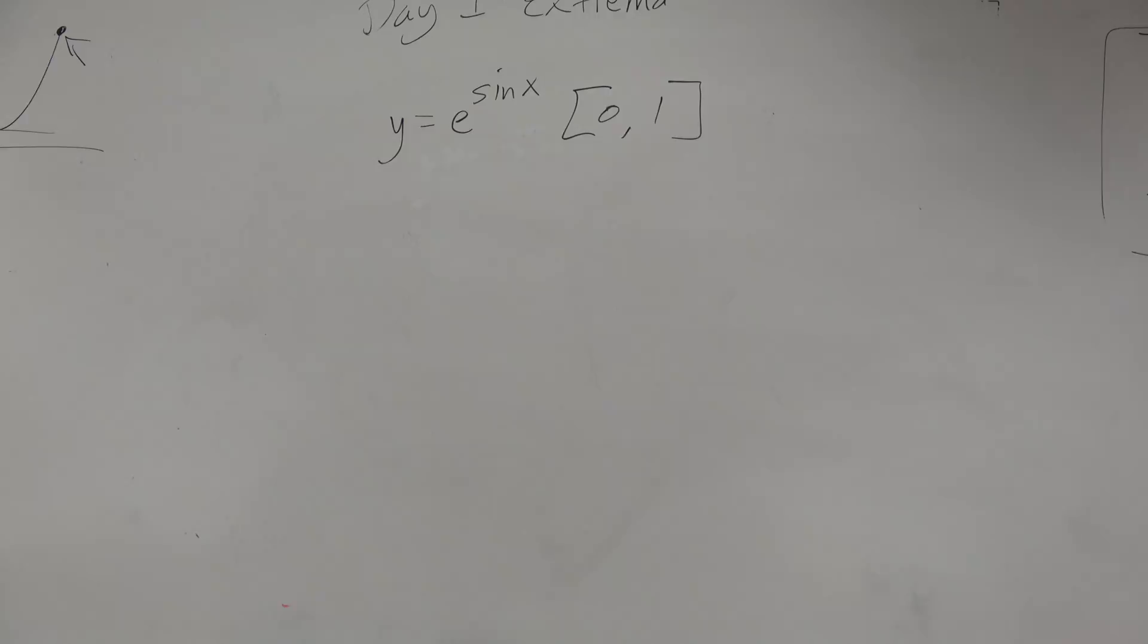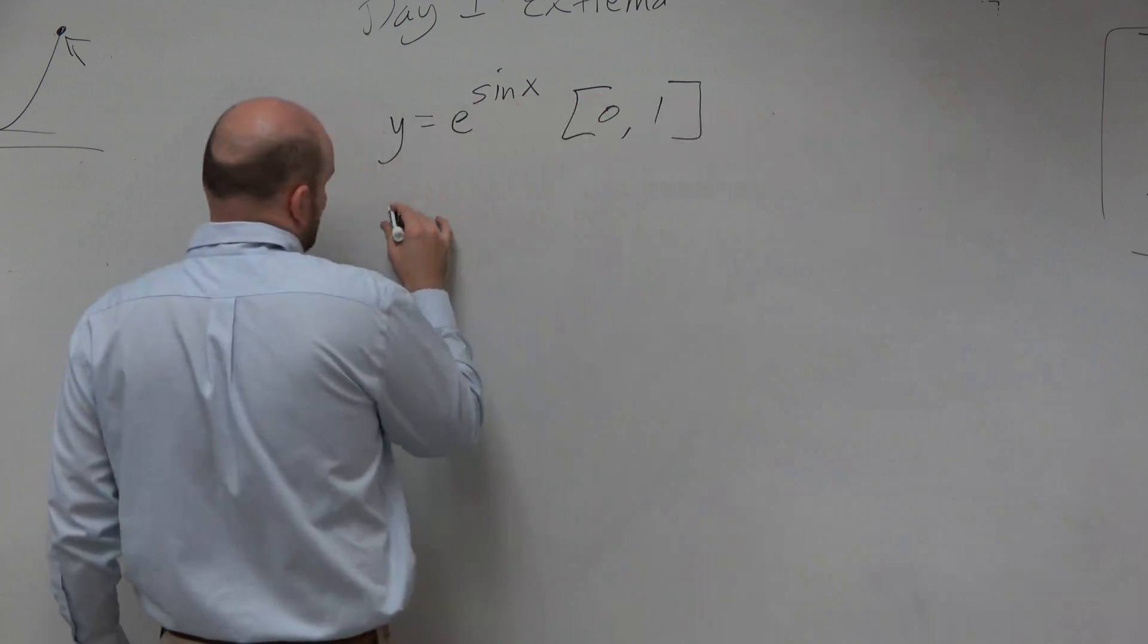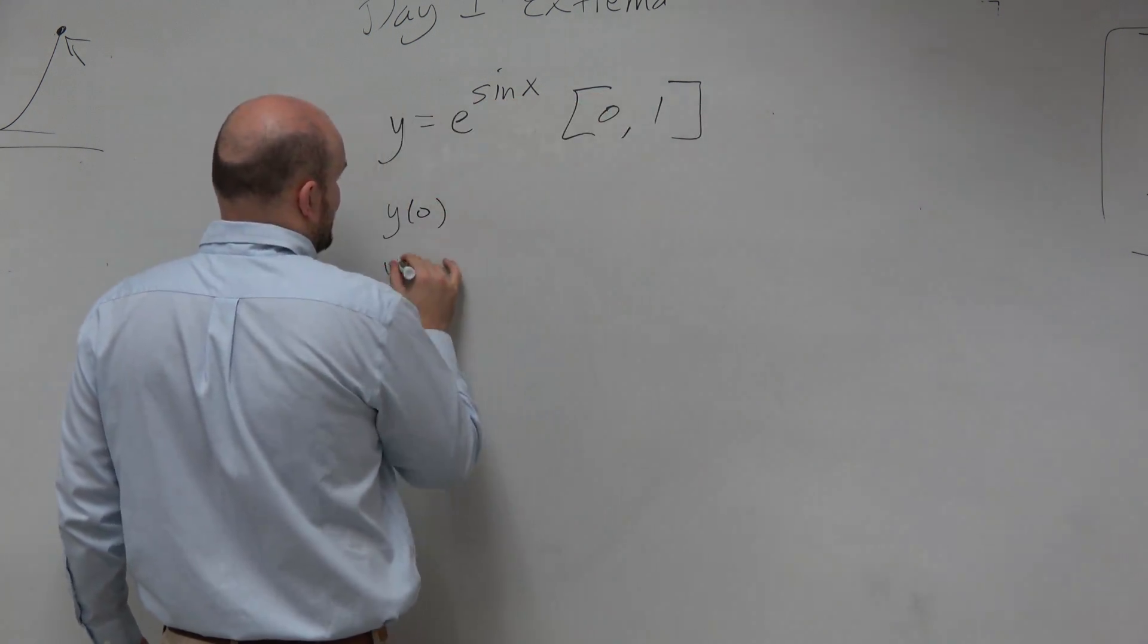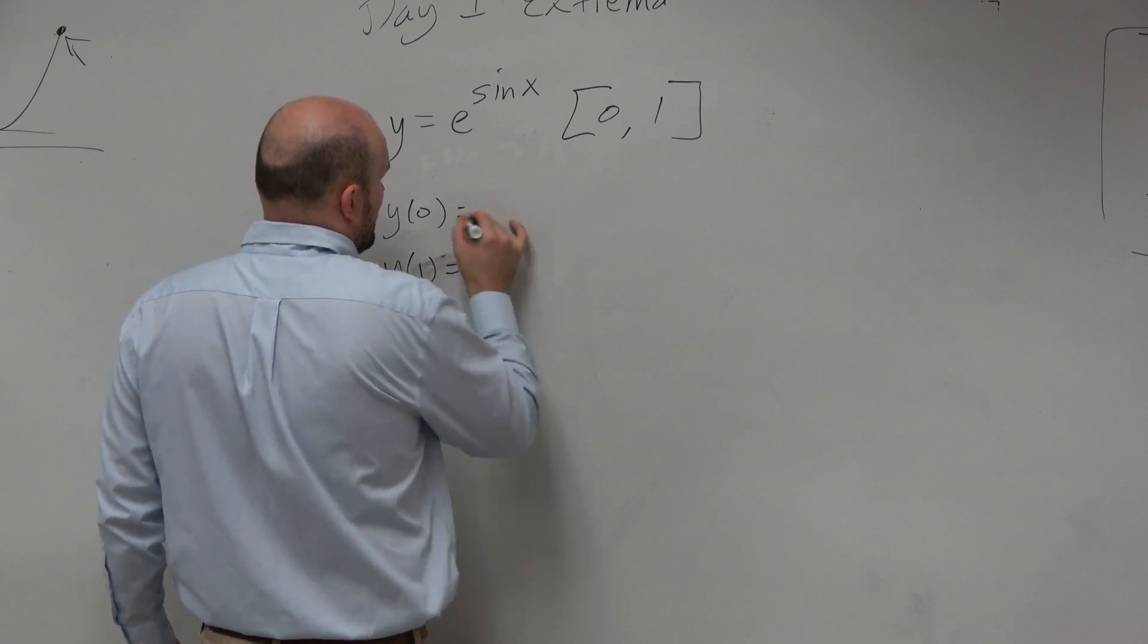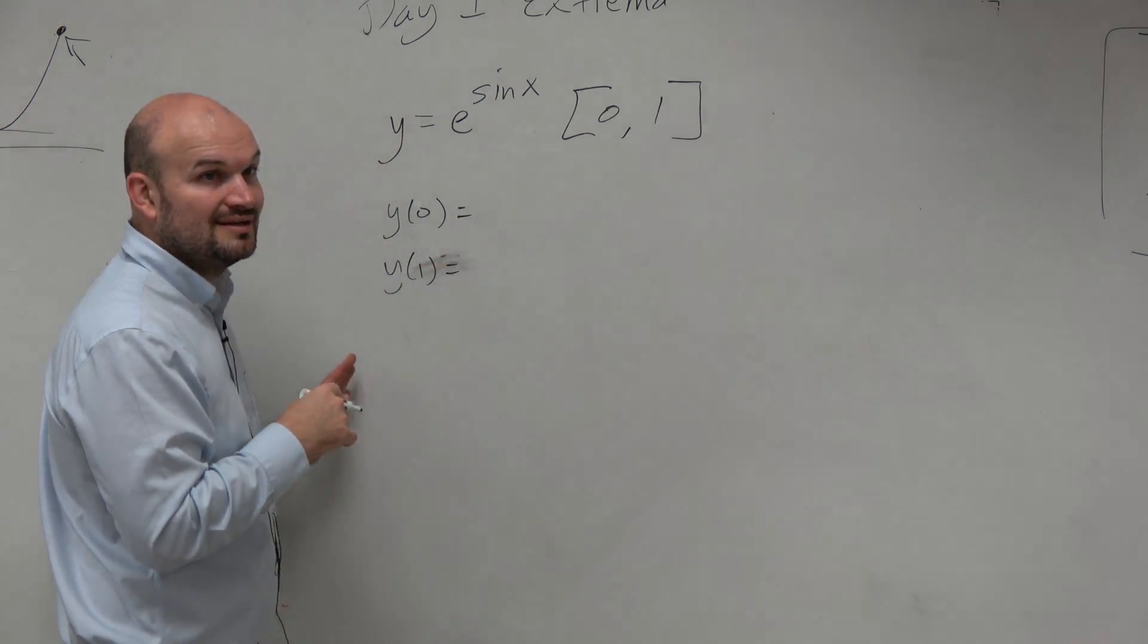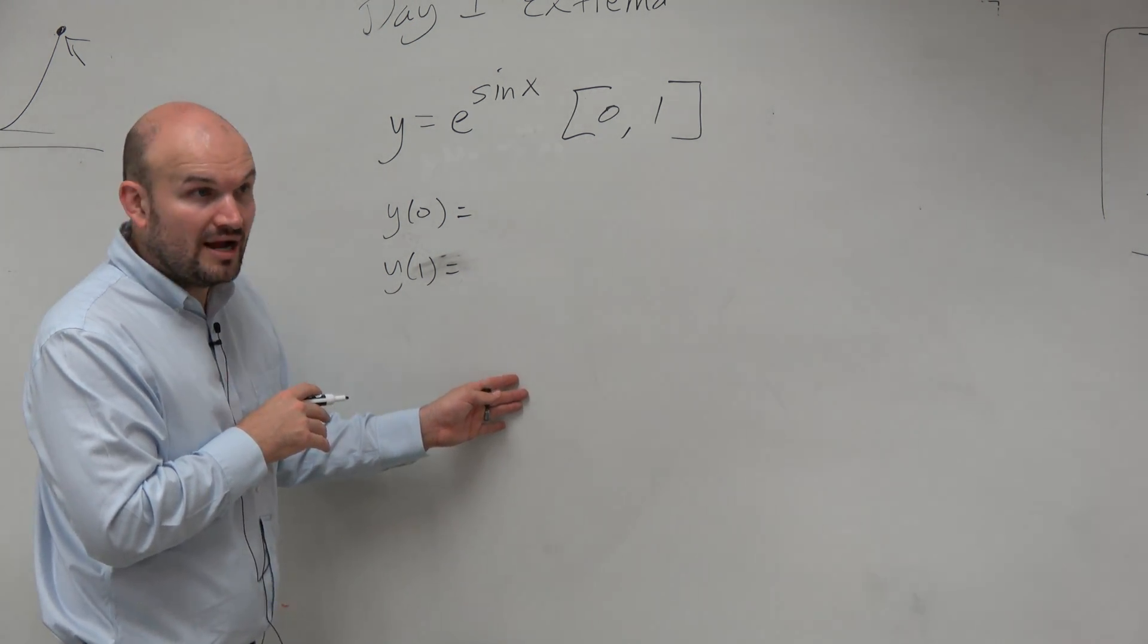And what we've looked at, guys, is the max and min so far can occur at the endpoints. Right? They could occur at y of 0, they could occur at y of 1. But they could also occur inside the function. Correct?